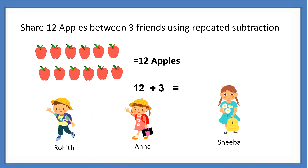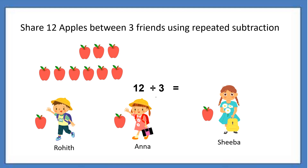Now, if you observe here, the first apple goes to Rohit. The next, second apple goes to Anna, and the third apple to Sheba. So now, how many apples are here? You can count — 9 apples. That means out of 12 apples, minus 3: 3 apples have been given to Rohit, Anna, and Sheba. So now 9 apples are there.